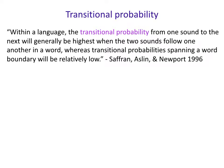Saffron, Aslan, and Newport in 1996 had this idea about how transitional probability could be used for speech segmentation. They said that within a language, the transitional probability from one sound to the next will generally be highest when the two sounds follow one another within a word, but when they span a word boundary, those transitional probabilities are going to be relatively low.